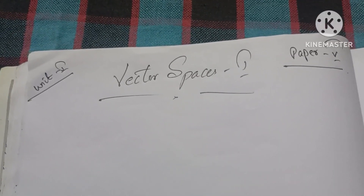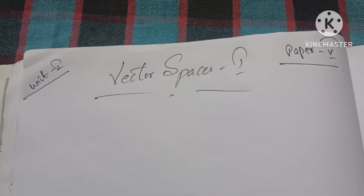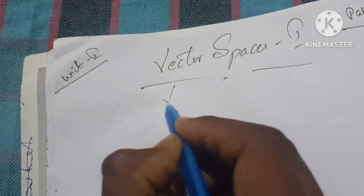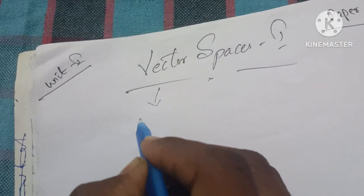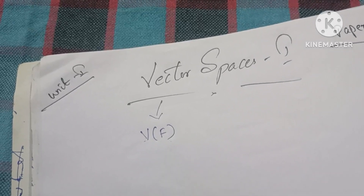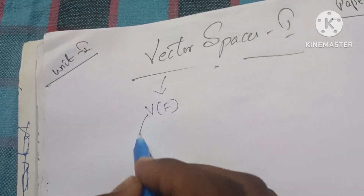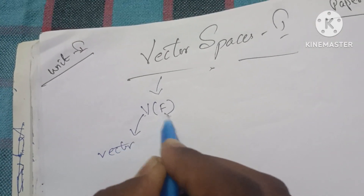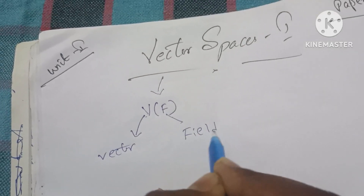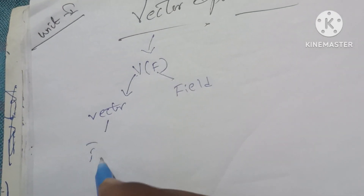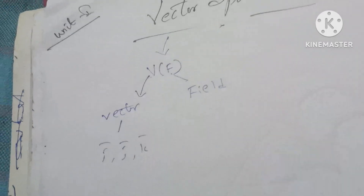Vector Spaces — let's start the Vector Space V of F. V is the vector and F is the field. Normally we start with I bar, J bar, K bar.